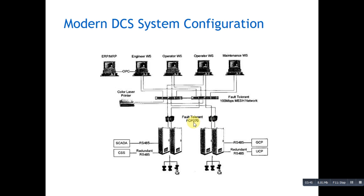From this, it goes to the Ethernet domain, the fault-tolerant 100 Mbps Ethernet mesh network. There are various maintenance workstations, operator workstations, and engineering workstations connected to this network. There is an OPC server, and there is an ERP computer which is connected with the engineering workstation to this OPC server.